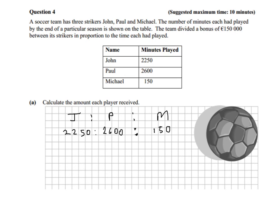What this really is, it's a ratio. It's saying divide this £150,000 up in the ratio of 2,250 is to 2,600 is to 150. So we can say John corresponds to 2,250, Paul corresponds to 2,600, and Michael corresponds to 150. Now of course, this kind of ratio isn't really much use to us because the numbers are really too big.